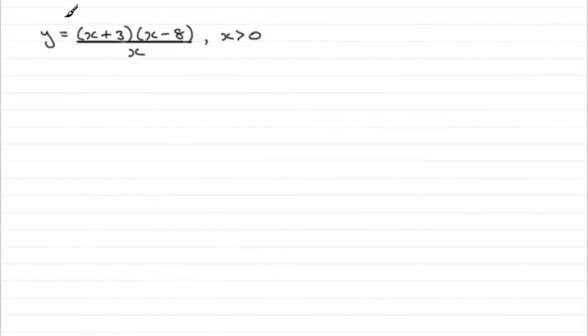Okay, for this part of the question then, we're given that y equals x plus 3 times x minus 8, all divided by x, where x is greater than 0. And we've got to find dy by dx. So how are we going to do that?